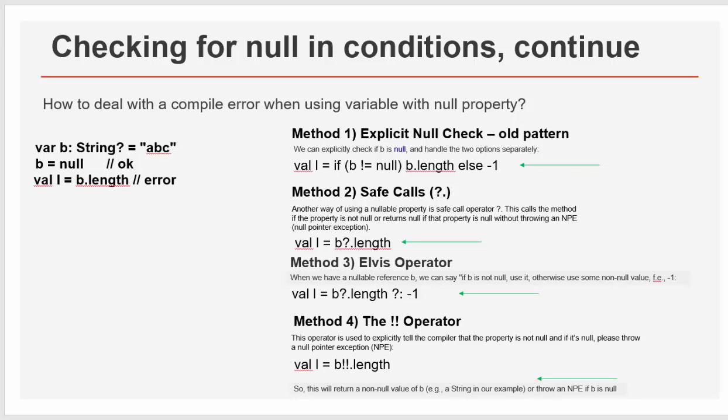And the last one, method four is two exclamation marks operator. This operator for those students, for those programmers who love null pointer exceptions. They just cannot live with them. And the operator is used for explicitly telling the computer that the property is not null. And if it's null, please throw a null pointer exception. And you enjoy this NPE. You really have this case of NPE, you can use it. So this will return a non-null value, for example, in the string in our example, or throw NPE.